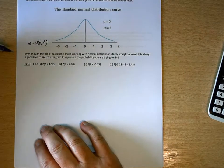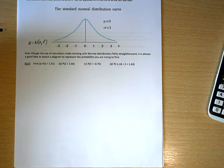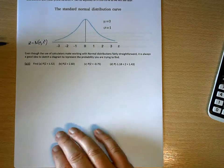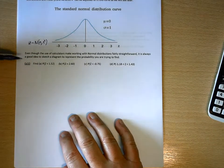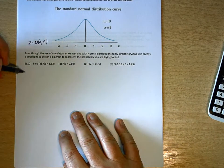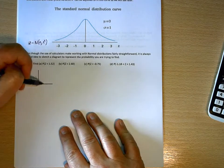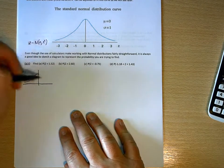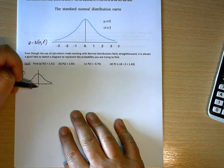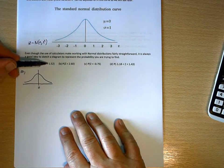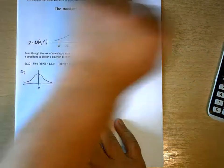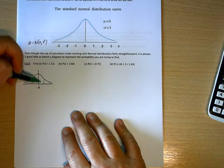So, always good with normal distribution questions to draw a little sketch of what you're trying to find. So for part A here, Z is less than 1.52, so my normal looks like that, 0 is there, so 1.52 is going to be this side of the curve.